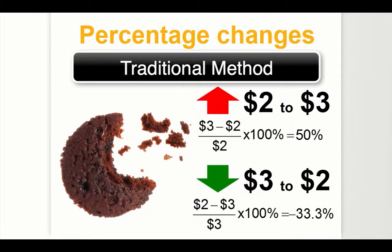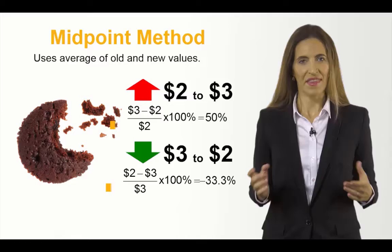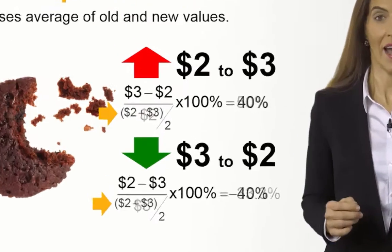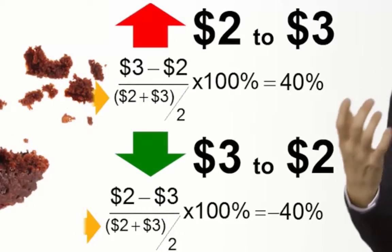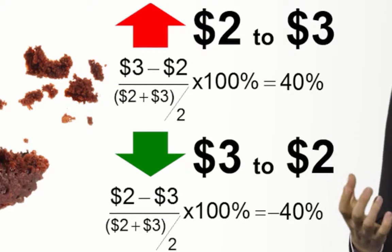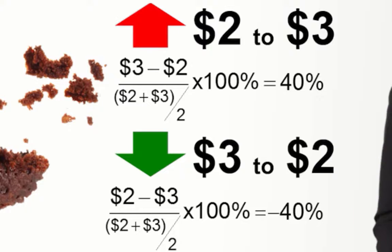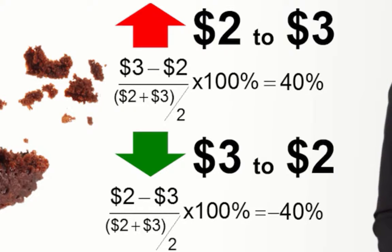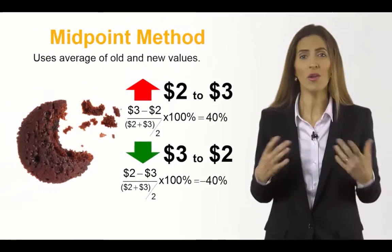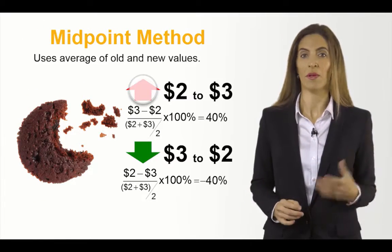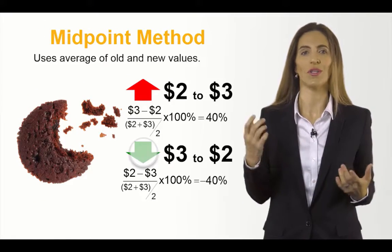We solve this by calculating all percentage changes using the midpoint method. This method uses the average of the initial and the ending value of the variable in the denominator of our percentage variation formula, so it no longer matters if the variable increased or decreased.